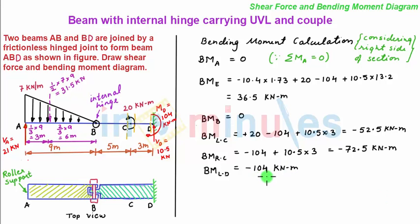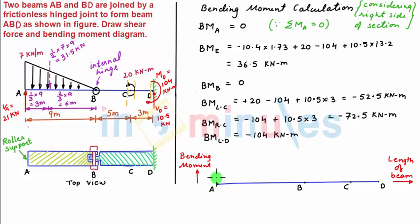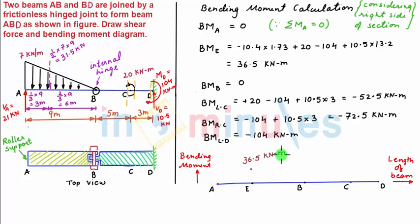We now plot the bending moment diagram. The bending moment at A is equal to 0, so it will be on the zero line of the diagram. Then the bending moment at E is equal to 36.5 kN·m, so by taking a suitable scale I plot plus 36.5 kN·m above point E. Next, the bending moment at B is equal to 0. Now, how is the bending moment varying between points A and B? Since there is a uniformly varying load between A and B, the bending moment curve will be a cubic curve.